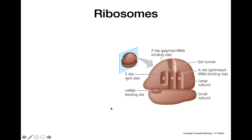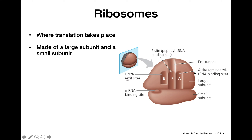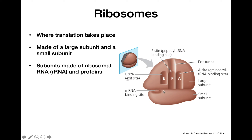Looking at our ribosome — this is where translation is really taking place. We have the large subunit and the small subunit, and each of these subunits is made up of ribosomal RNA (rRNA) as well as some proteins. They are assembled in the nucleolus, which is inside the nucleus. There are a few different sites in the ribosome that are important to how it actually functions.